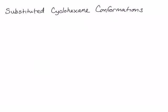In this lecture, we're going to cover the conformations of mono- and di-substituted cyclohexanes. We've already discussed the fact that a cyclohexane ring is going to adopt a chair conformation so that it can have perfect tetrahedral carbons with 109.5 bond angles. We also talked about the fact that the cyclohexane ring can flip, and when the ring flips, equatorial substituents become axial and axial substituents become equatorial.